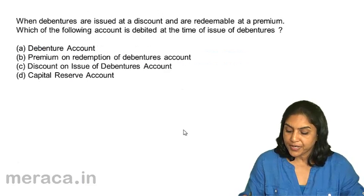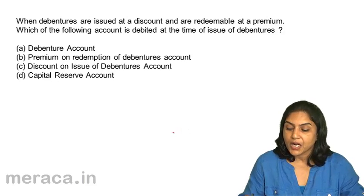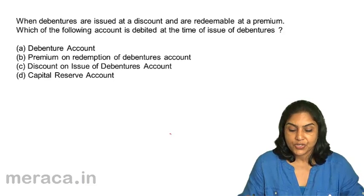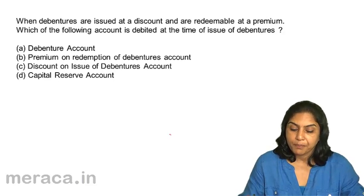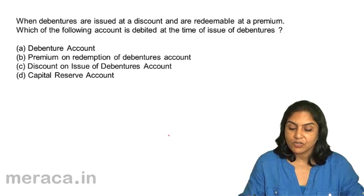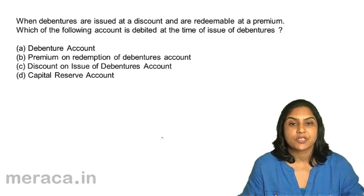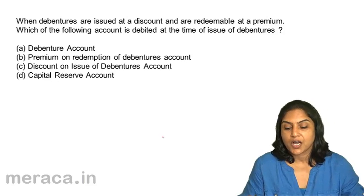Next, when debentures are issued at a discount and are redeemable at a premium, which of the following account is debited at the time of issue of debentures? A: debenture account. B: premium on redemption of debenture account. C: discount on issue of debentures account. And D: capital reserve account.